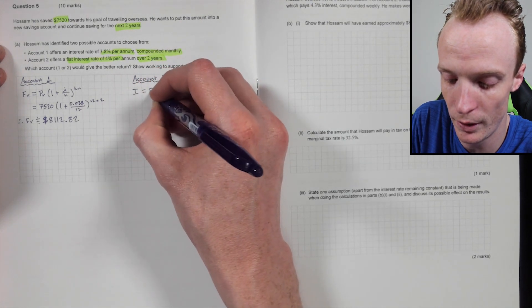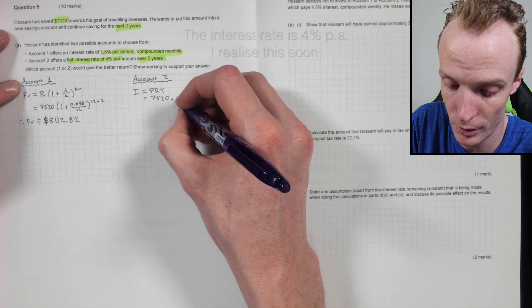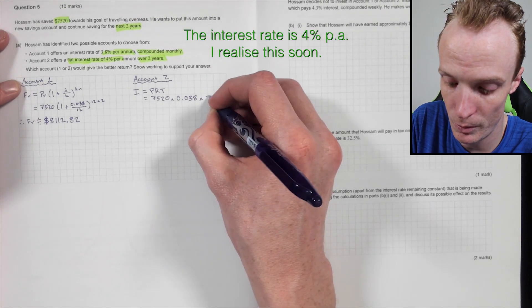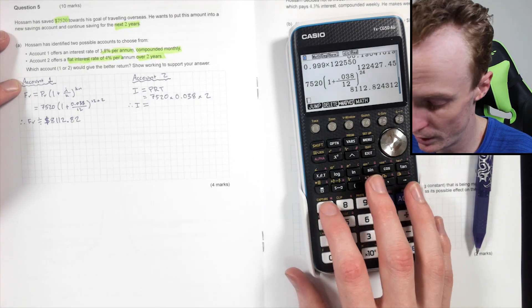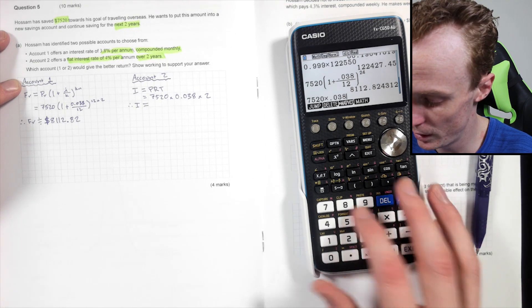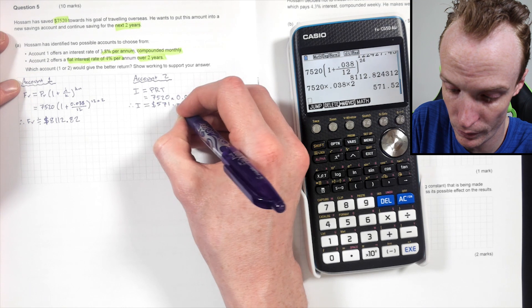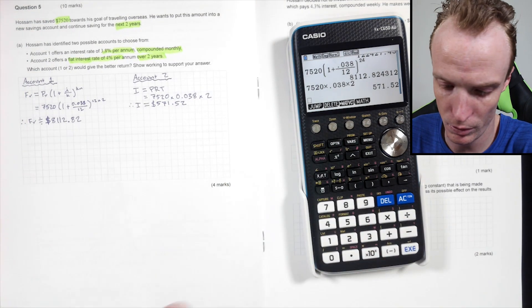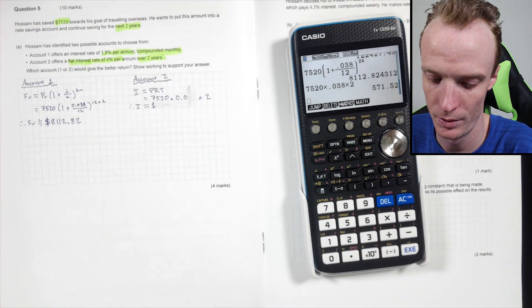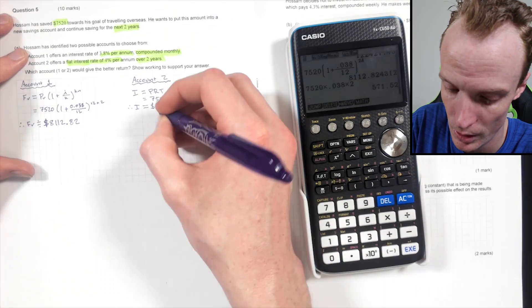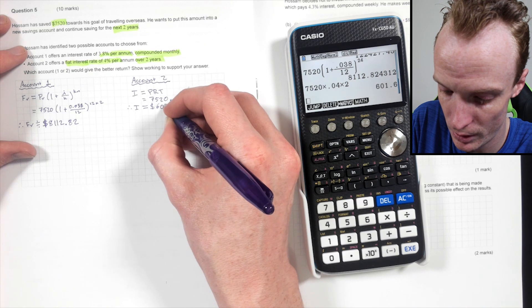So simple interest formula, it's I equals PRT. So the principle was 7,520 times the interest rate of 0.038 times the time, which is two years. So therefore the interest is going to be 7,520 times 0.038 times two, which is going to be 571.52. And I've just realized I've used the wrong interest rate value. 4% is my interest rate. So 0.04. So let's just quickly go and change that. So it'll be 601.60.